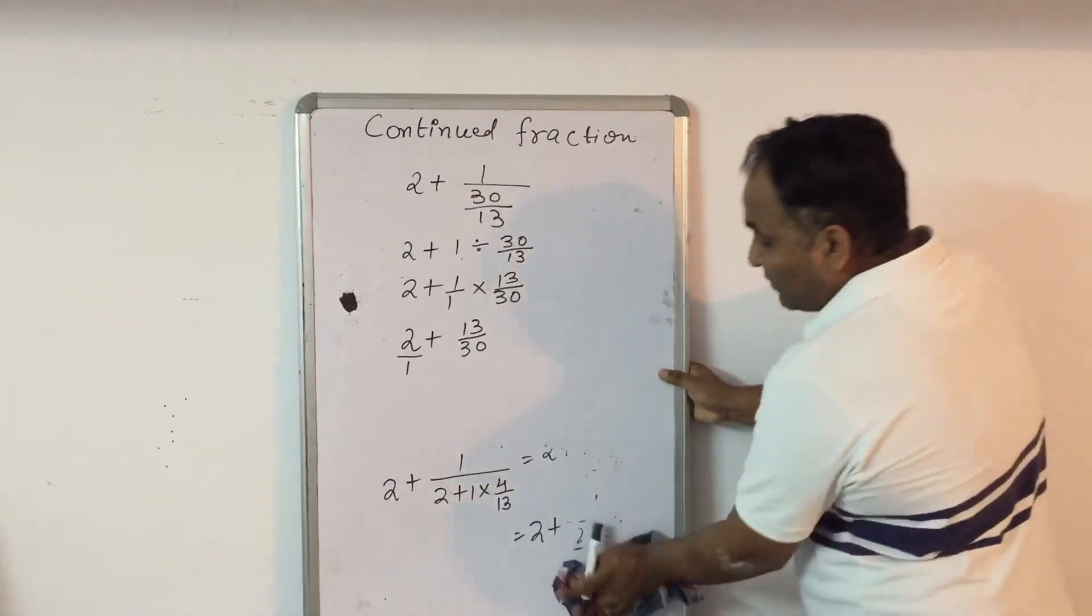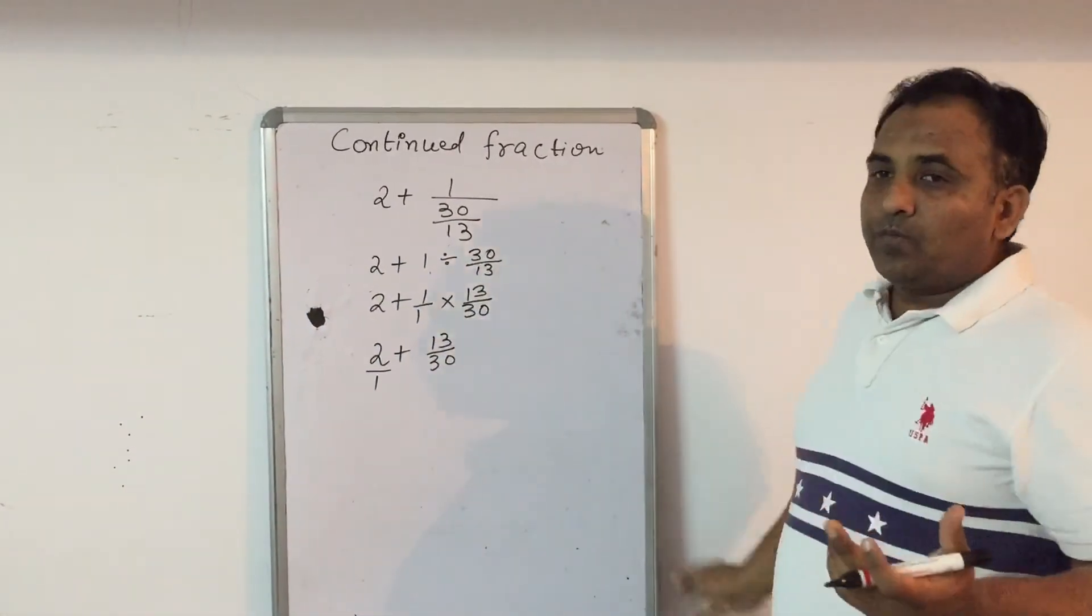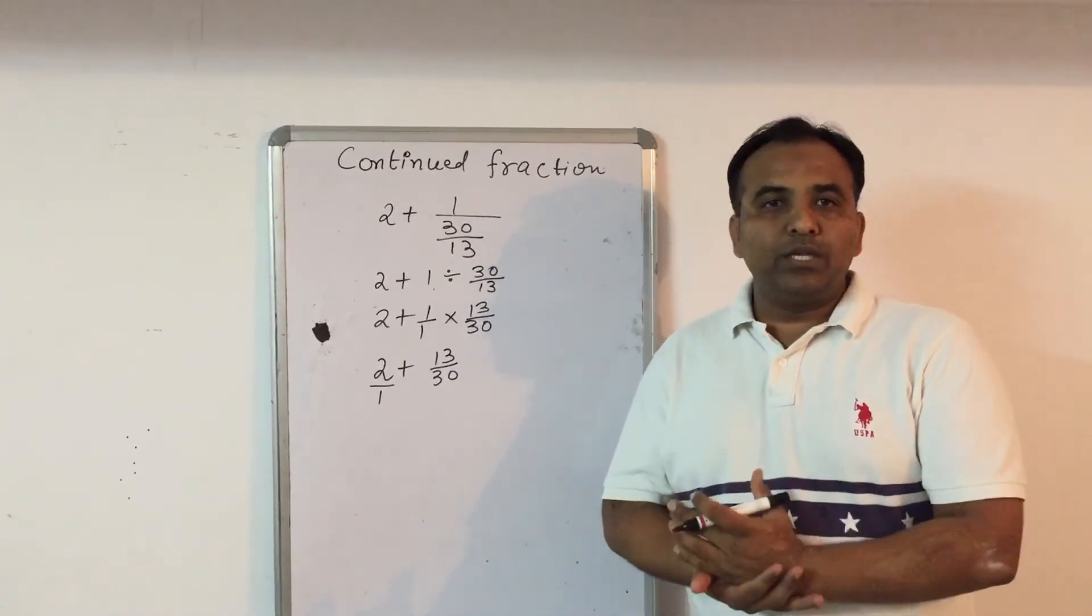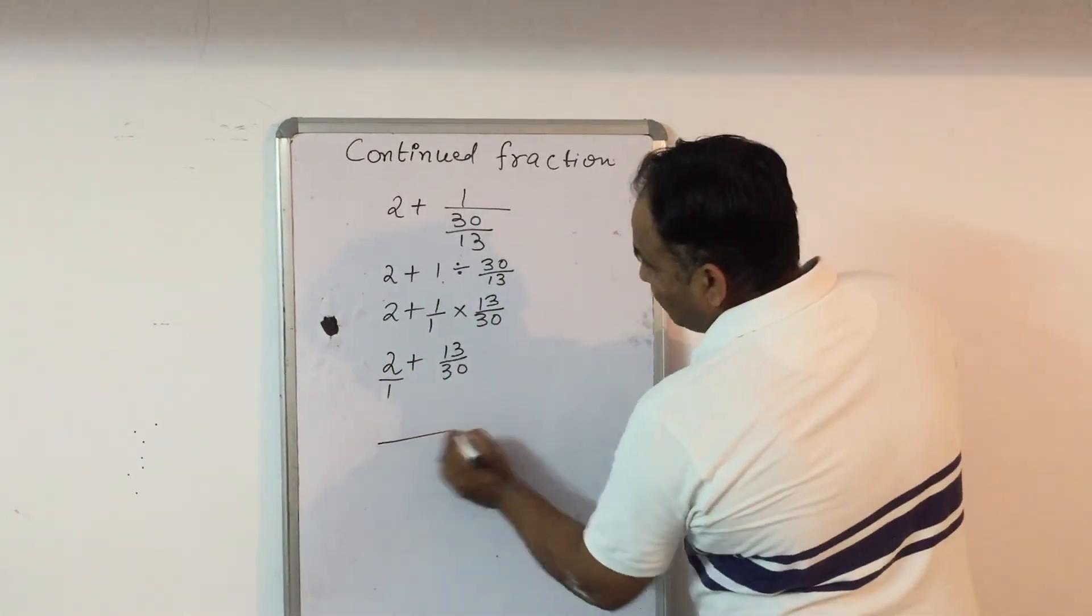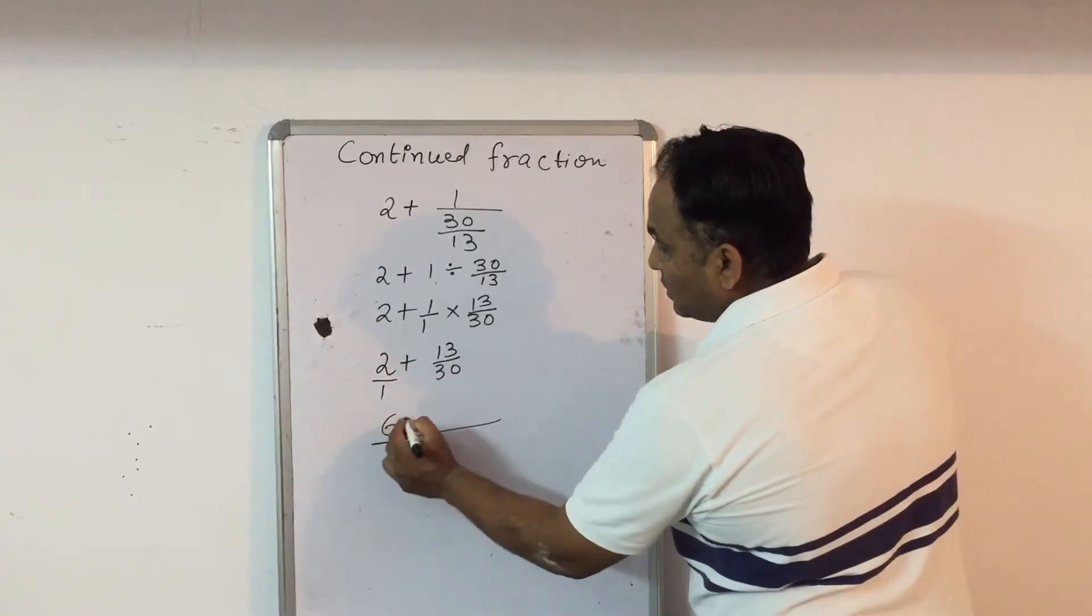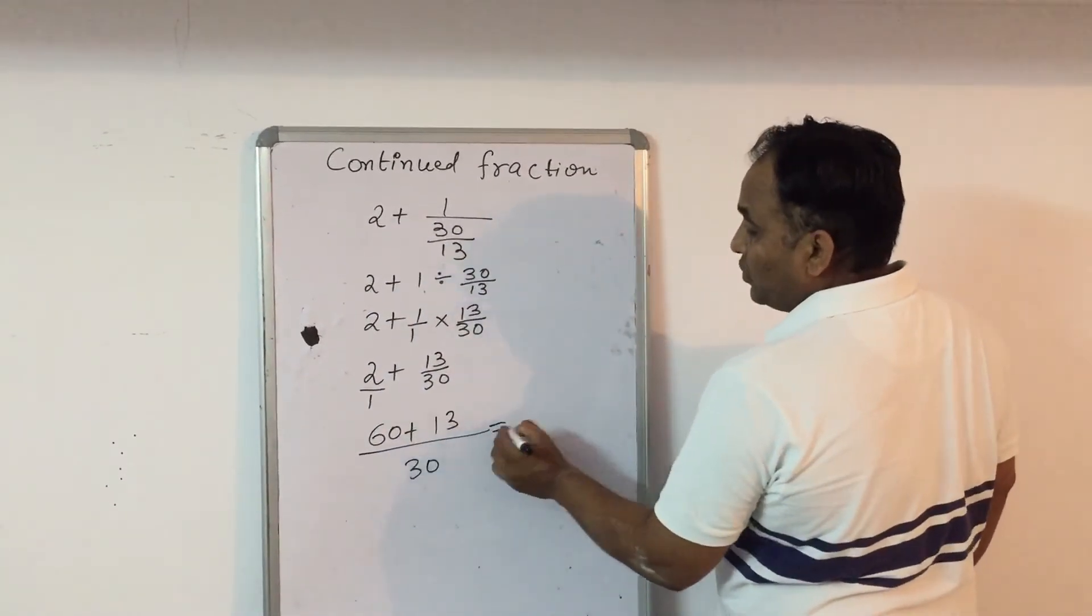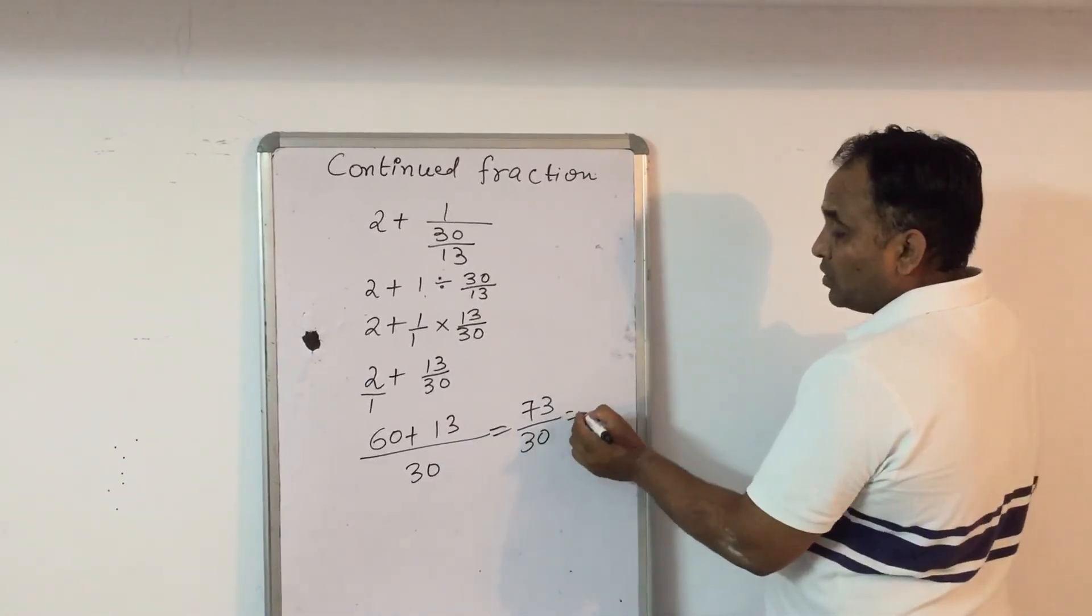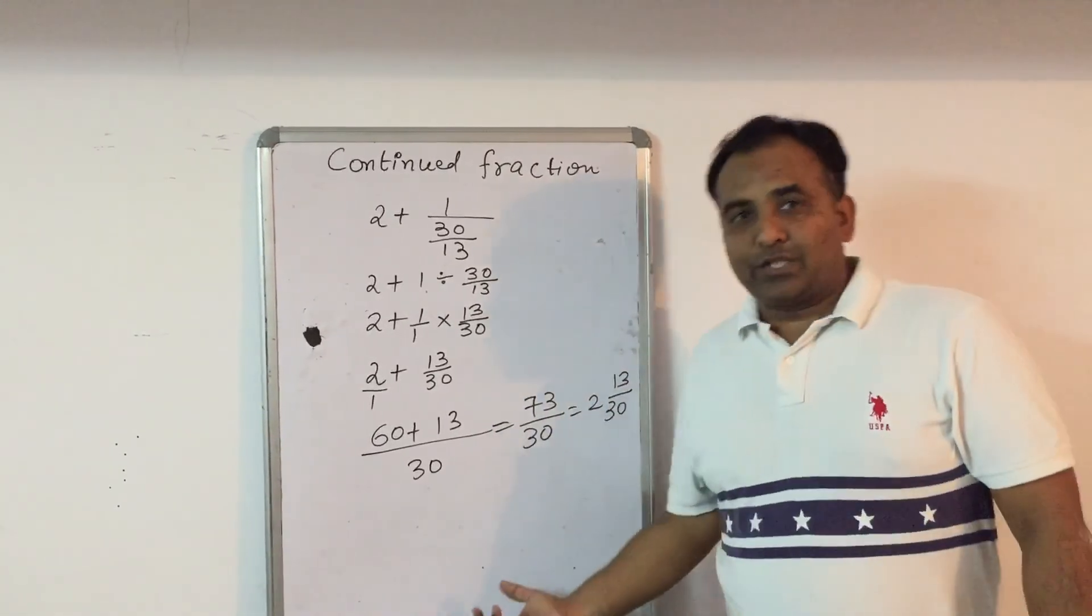When we don't have anything in the denominator, we can put 1. Any integer can be made a rational number by putting 1 in the denominator. Now again, we will take the LCM of 30 and 1, that will be 30. 2 into 30 is 60, 1 into 13 is 13, so 60 plus 13 is 73. So the answer is 73 upon 30, or 2 and 13 upon 30. You can convert it into mixed fraction.